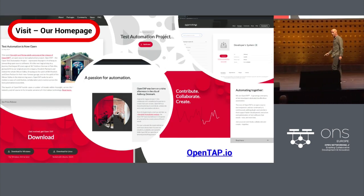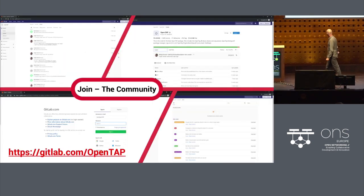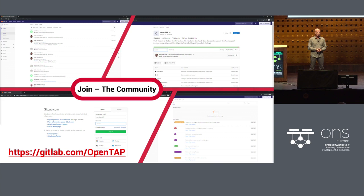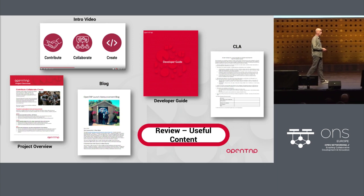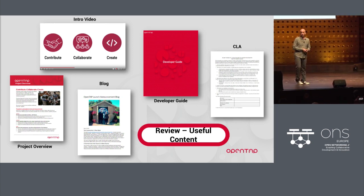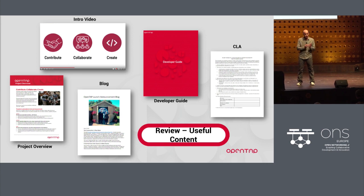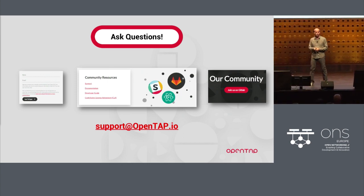OpenTAP has a home — we built a website at OpenTAP.io, and the code is available on GitLab. We're inviting everybody to come take a look, see what value you find, and then maybe contribute and use it. Once you get there, you'll find a ton of resources: an introduction video, a developer guide, a project overview, a blog, and all sorts of things to get you kick-started. There's also a monitored email address where you can ask questions and you will get answers.